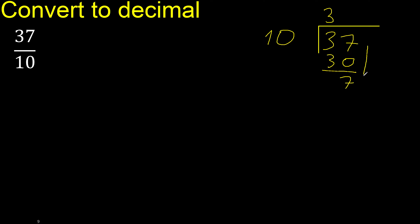There is no number that goes down, therefore complete. Always complete with 0 here. Point — place the decimal point only once. 10 multiplied by which number...